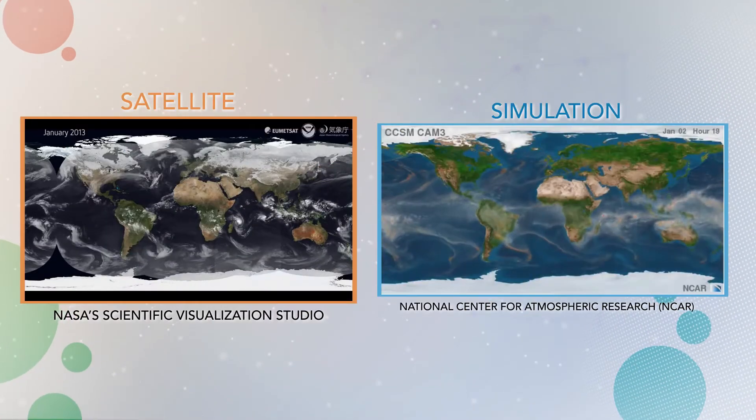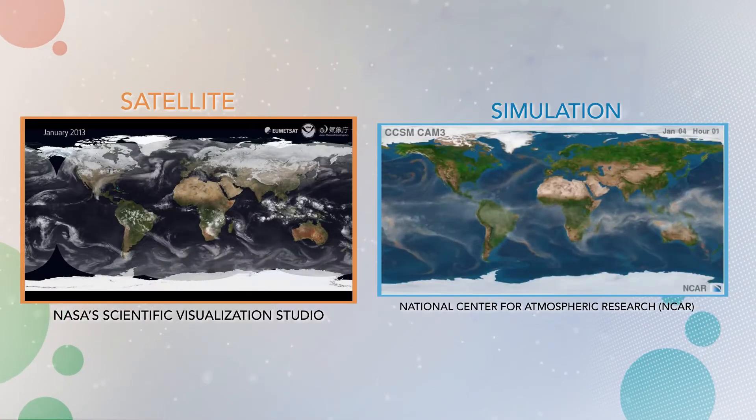When we visualize the results or output of these global climate models, it is sometimes difficult to tell the difference between the model output and actual measurements from satellites, weather stations, or other observing systems. That's how good today's global climate models are.